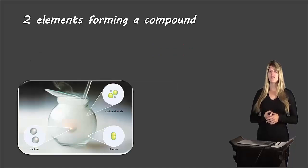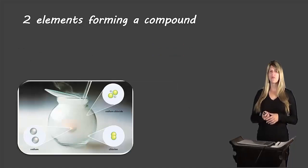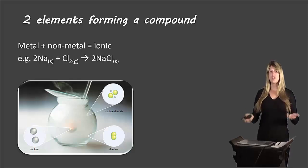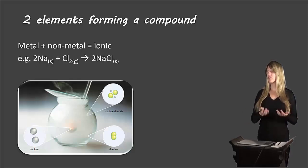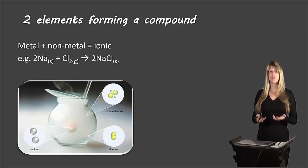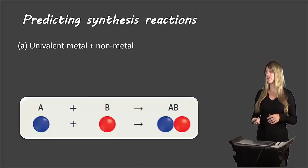When two elements form a compound, if you have a metal and a non-metal, you end up with an ionic compound. For example, sodium metal and diatomic chlorine come together to produce sodium chloride, an ionic compound.